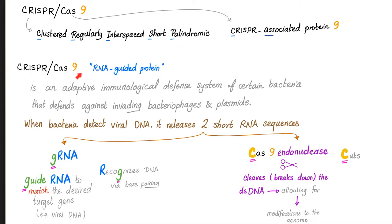CRISPR-Cas9 — what is this? It's the RNA-guided protein. You have a bad gene in your DNA; we're trying to cut it away and paste a new gene that's functioning.